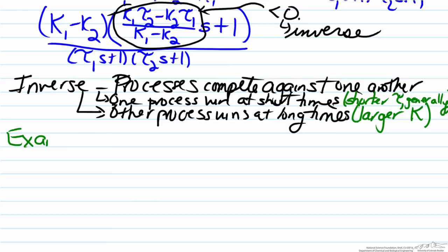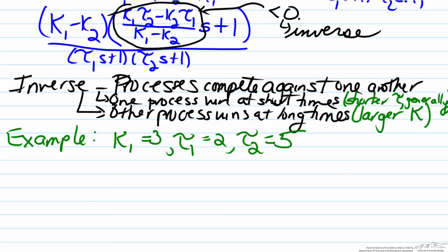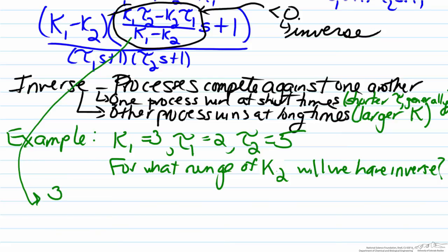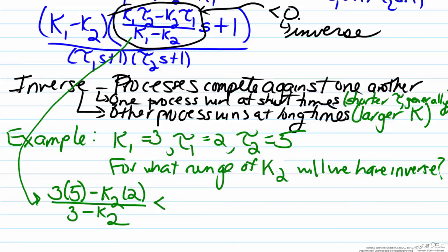To show this, let's do an example where k1 = 3, tau one = 2, and tau two = 5. For what range of k2 will we have an inverse response? Since tau one (2) is less than tau two (5), tau one responds quicker and will win at short times. We use the condition that (k1·tau2 − k2·tau1)/(k1 − k2) < 0, which gives us (15 − 2k2)/(3 − k2) < 0.